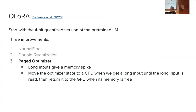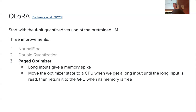The final improvement is the paged optimizer. Because Adam's optimizer state requires a lot of memory, long inputs cause memory spikes. QLoRA handles this by detecting when long inputs occur and temporarily transferring the Adam optimizer state from GPU to CPU, processing the long input, and then mapping the optimizer state back to the GPU when memory is freed.